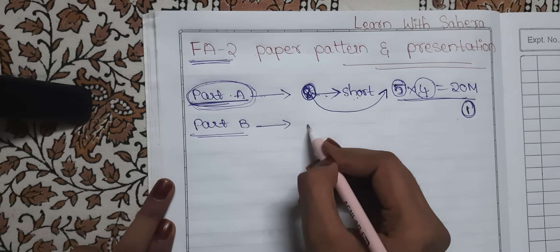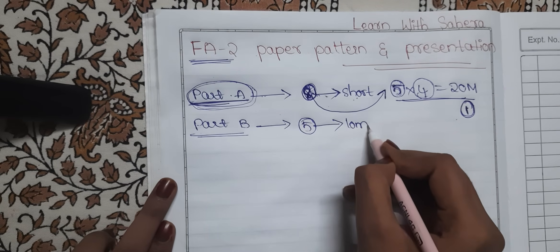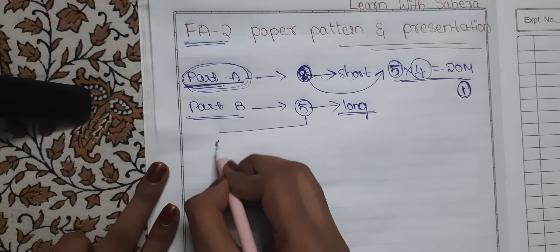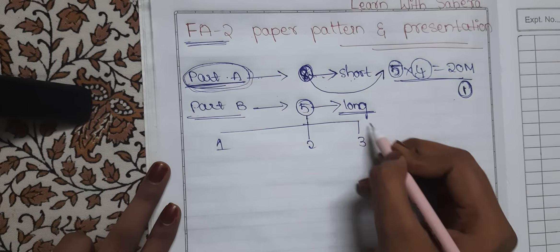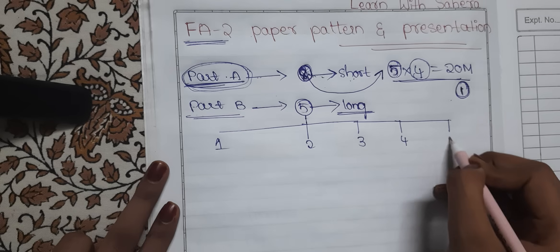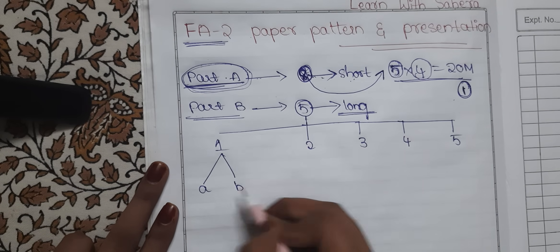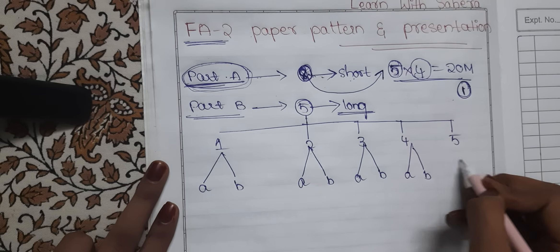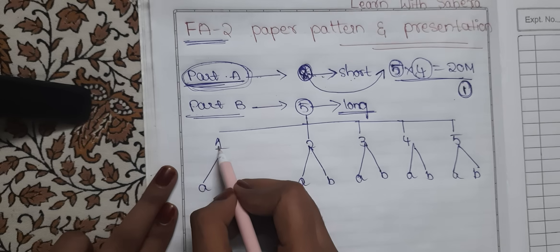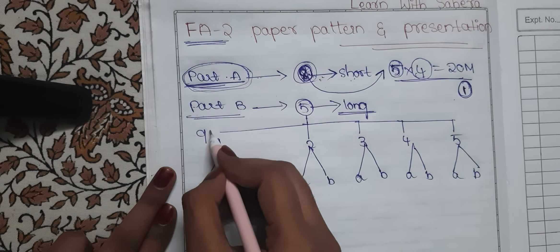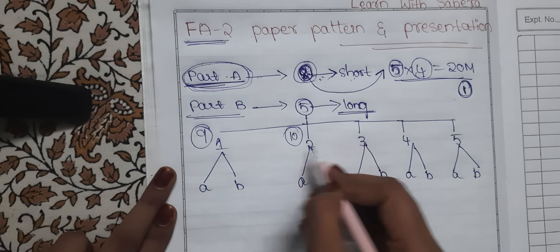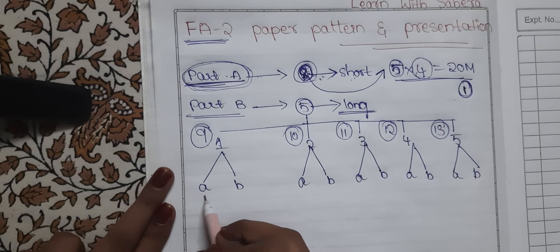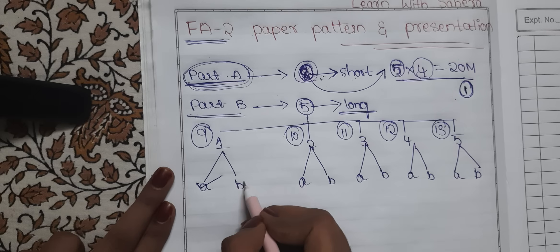Part B has five long questions, each from a different unit — Unit 1 through Unit 5. Each unit's question will have two options: Option A or Option B. So the questions are numbered Q9 through Q13 — Q9 from Unit 1, Q10 from Unit 2, Q11 from Unit 3, Q12 from Unit 4, and Q13 from Unit 5.